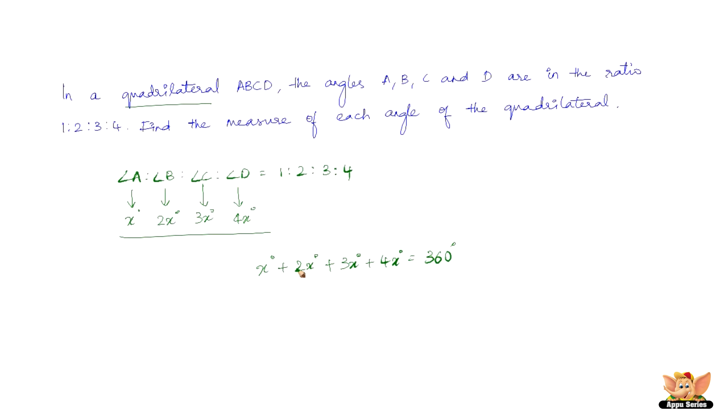The sum of all these is 1 plus 2 is 3, 3 plus 3 is 6, 6 plus 4 is 10x degrees equals 360 degrees. x degrees equals 360 by 10, which is 36 degrees.